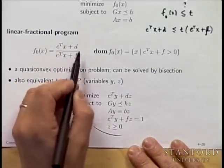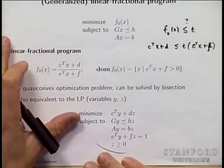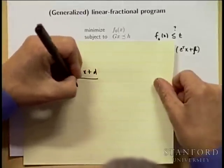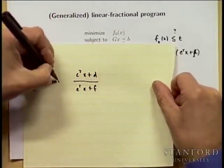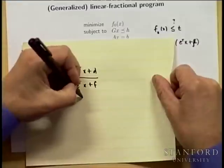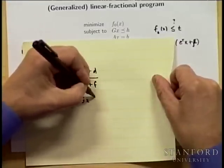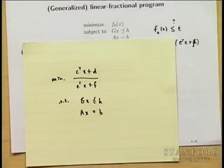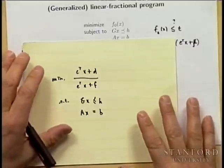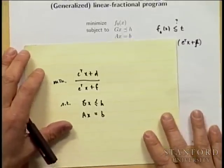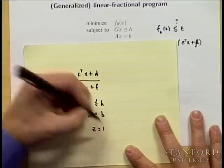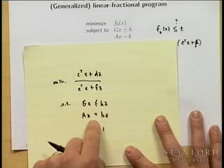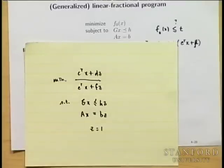Starting with the original problem, introduce a new scalar variable Z and set it equal to 1. I want to minimize C transpose X plus D divided by the denominator, subject to H and AX equals B. When you add Z equals 1, you haven't changed anything — you've just multiplied things by 1. If you stare at the problem without the Z equals 1 constraint, you realize it's completely homogeneous: scaling X and Z by a positive number has no effect on the inequalities or the objective.